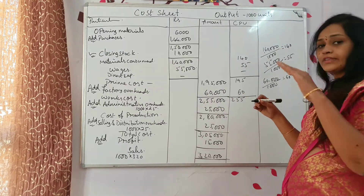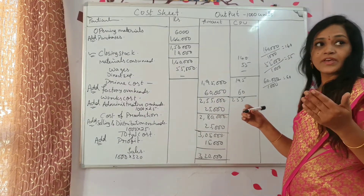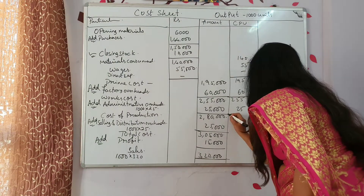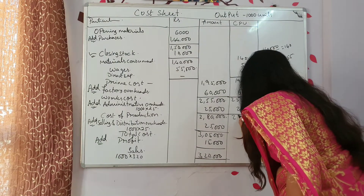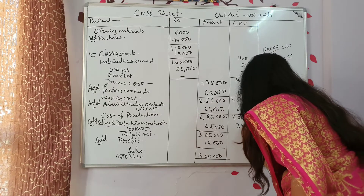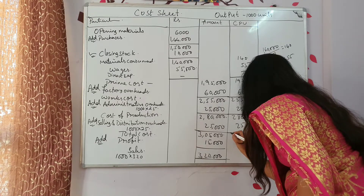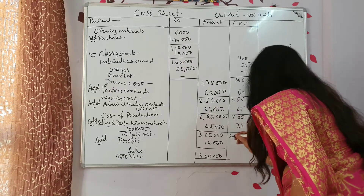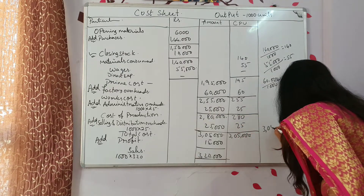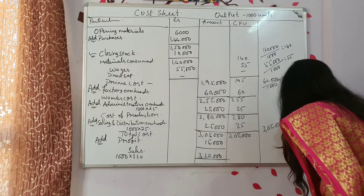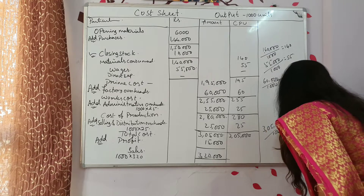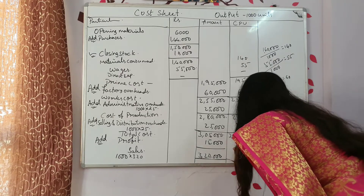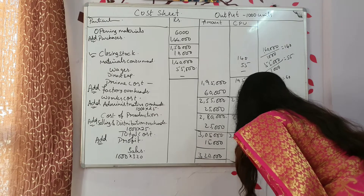Administrative overheads: 25,000 — already in the question itself they have given you it is 25 rupees per unit. Now the total: 280. Selling and distribution overheads: 25 only. Now 3,05,000 divided by 1000 units you will get 305. So this is 305.